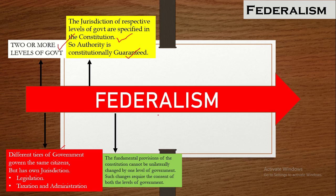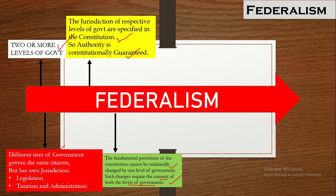Moving to the fourth feature: the fundamental provisions of the constitution cannot be unilaterally changed by one level of government. Such changes require the consent of both levels of governments. It is a very important provision because any change to areas of jurisdiction needs to be consented to by both levels of governments. No particular government can unilaterally change the clauses or provisions of the constitution.